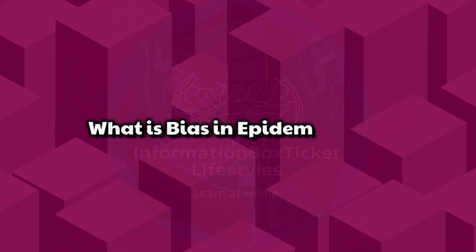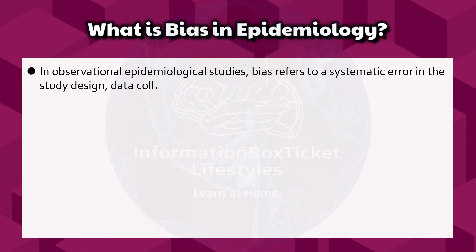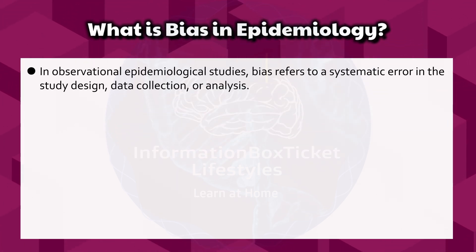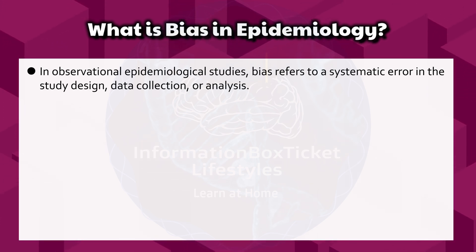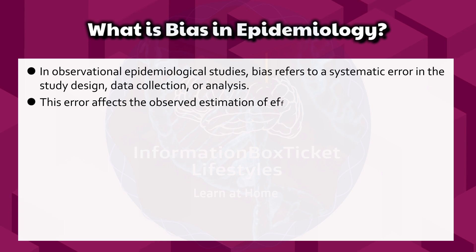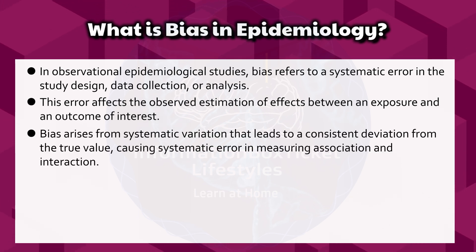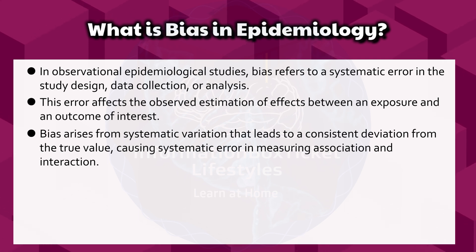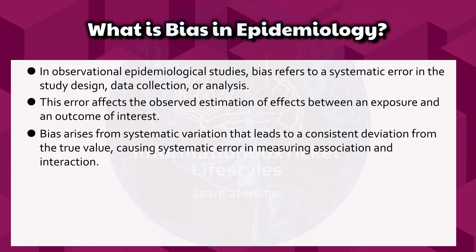What is bias in epidemiology? In observational epidemiological studies, bias refers to a systematic error in the study design, data collection, or analysis. This error affects the observed estimation of effects between an exposure and an outcome of interest. Bias arises from systematic variation that leads to a consistent deviation from the true value, causing systematic error in measuring association and interaction.